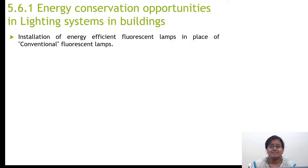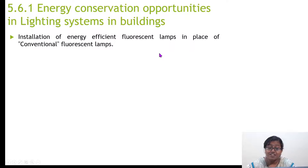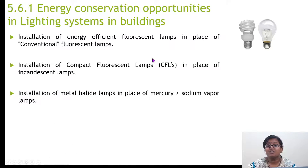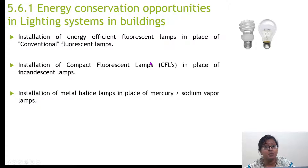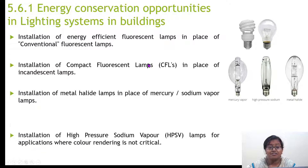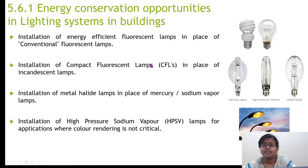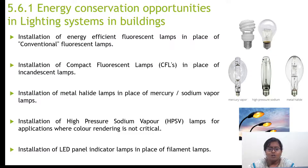How can you conserve energy in a building's lighting systems? By installation of energy efficient fluorescent lamps in place of conventional fluorescent lamps. You can install CFLs in place of incandescent lamps. You can install metal halide lamps in place of mercury or sodium vapor lamps, because those consume more energy. You can also install high pressure sodium vapor lamps for applications where color rendering is not important, like streetlights. You can also use LED panel indicator lamps in place of filament lamps.